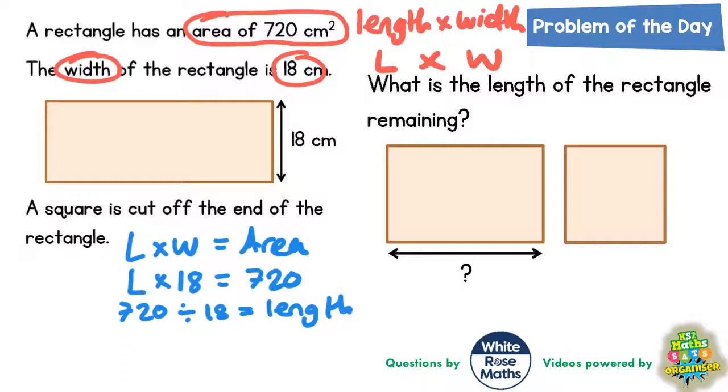Now the easiest thing to do here is count up in chunks of 18 until we get 720. So what we could say is that 1 lot of 18 is obviously 18, so 10 lots of 18 is going to be 180.